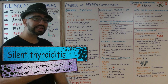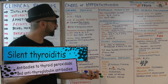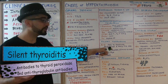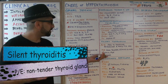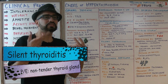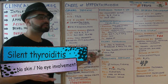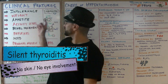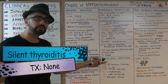Silent thyroiditis is silent because the patient experiences no symptoms and has nothing on physical exam. It's an autoimmune condition with antibodies to thyroid peroxidase and anti-thyroglobulin antibodies. The gland is non-tender and leaky — not hyperfunctioning — so T3 and T4 simply spill out. There is no skin involvement and no eye involvement, distinguishing it from Graves' disease. Since there are no symptoms or physical findings, no treatment is needed.